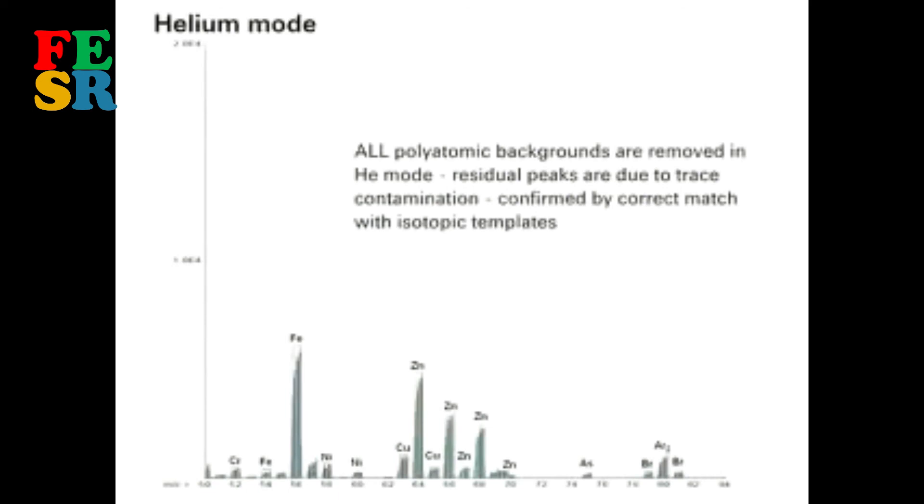Now watch what happens when helium is added to the cell. All matrix-based interferences are removed. The remaining elemental peaks are due to parts-per-billion level contamination in the matrix. This is confirmed by the correct isotopic template fit.